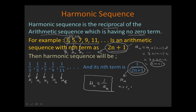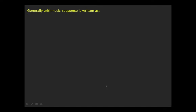Substituting values of n = 1, 2, 3 in the relation hn = 1/an: h1 = 1/a1, h2 = 1/a2, and h3 = 1/a3. For the general term, hn = 1/an. The arithmetic sequence is generally written as: first term a1, second term a1+d, third term a1+2d, fourth term a1+3d, and general term a1 + (n−1)d.